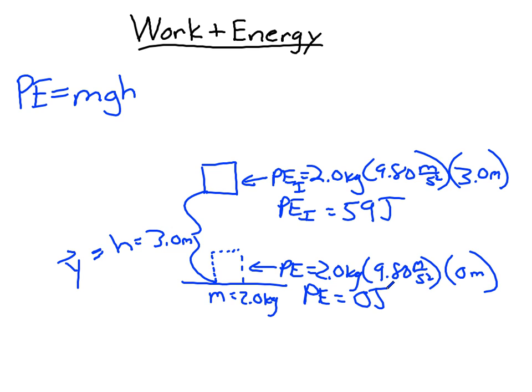So if I were to ask you with this situation, how much work was done on this mass? Well, I think it's pretty obvious. It'd be equal to the change in energy again, which would be 59 joules minus zero joules. And in the end, that's 59 joules.